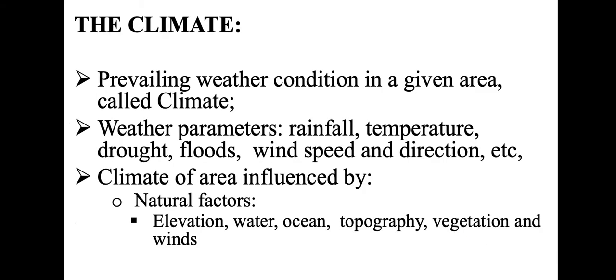Let's move to climate. What is climate? We're going to define climate in terms of weather. People will sometimes talk about climate in terms of environment, saying the climate of the classroom was good or bad. But in this lesson, we'll be defining climate in terms of weather. Weather parameters include rainfall, temperature, drought, flood, wind speed, wind direction, humidity, and clouds.